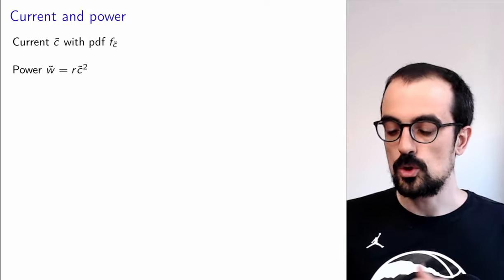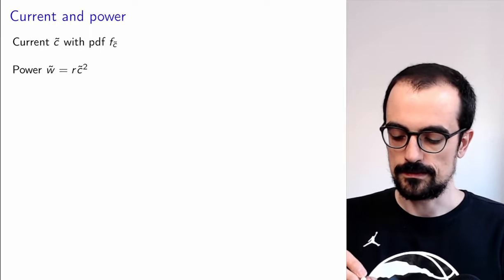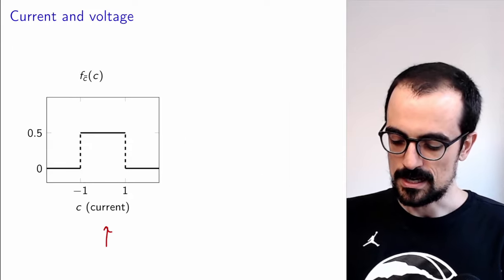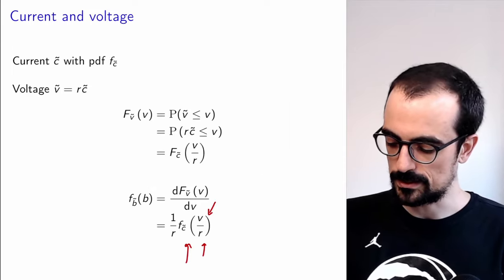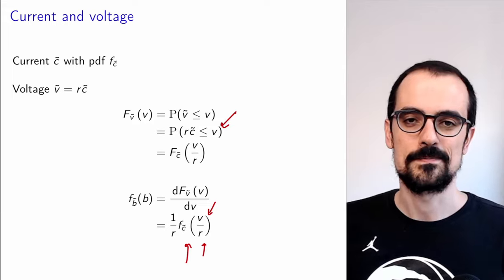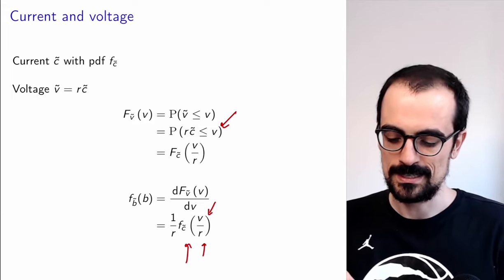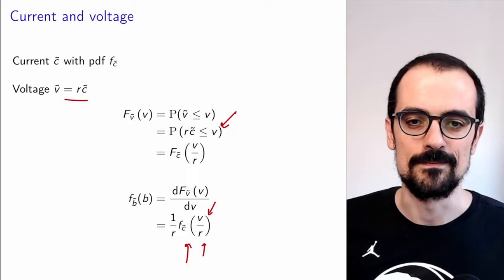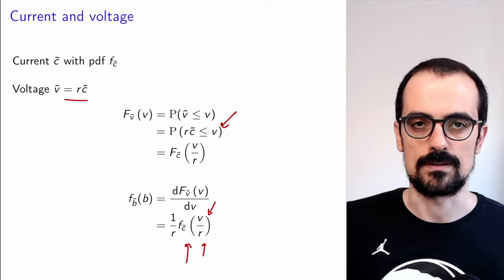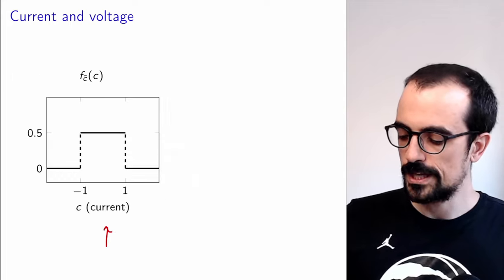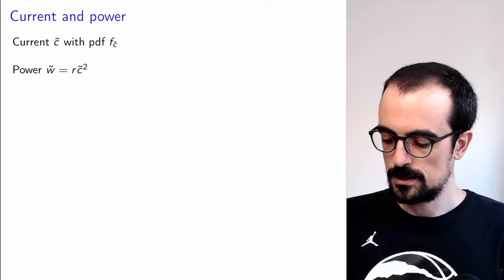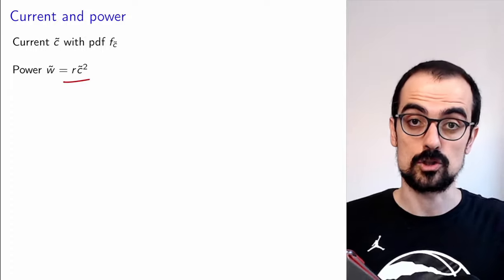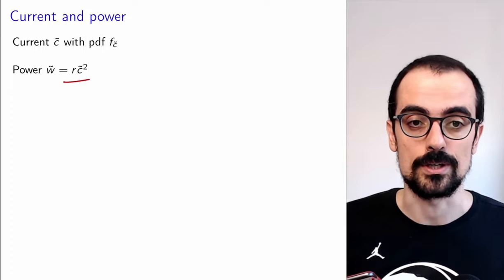Let's look at a more complicated situation where the function is not invertible. In the previous example our life was easy because we could essentially apply the inverse of h by dividing by R, which immediately gave us the CDF of the new random variable. Here we're not going to be able to do this, because the function we're interested in is a square — it's not invertible, which makes things a little bit tricky.